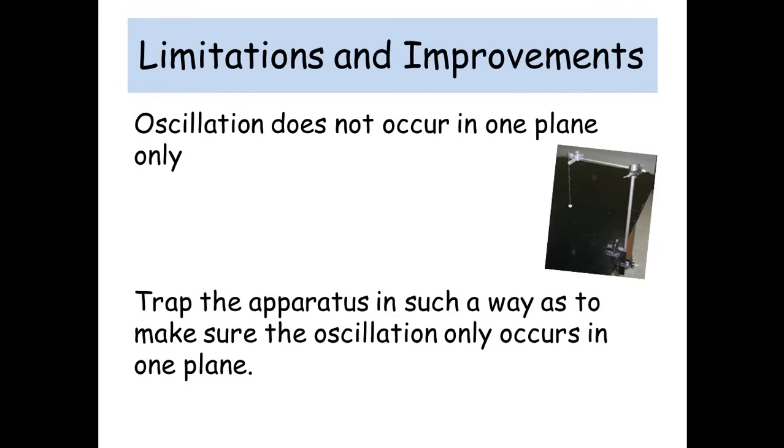Oscillation doesn't occur in one plane. So last year's experiment, it was a strange thing in that it was like a piece of string but also a spring. So it was meant to be like a resonance kind of experiment, and the thing was going all over the place. Now you can think about how can you make an oscillation in one plane? Well you can trap the apparatus in such a way to make sure the oscillation only occurs in one plane. So it's difficult with a pendulum. I don't know how you would do that without causing friction. But if it was a wooden rod, you could drill through it and then put a nail through it. That will make sure it only oscillates in one plane.